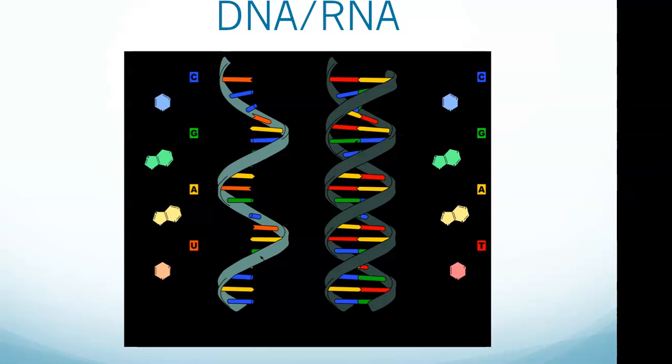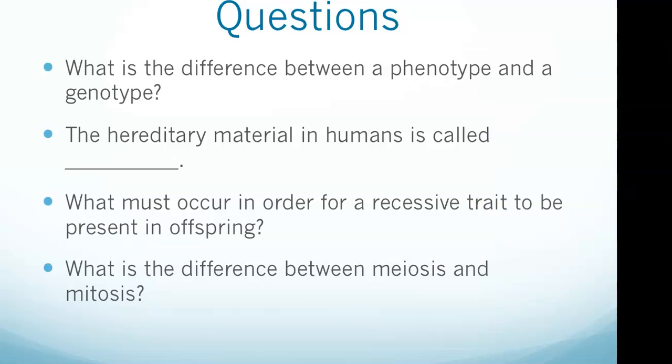DNA is the hereditary material in humans and almost all other organisms. So right away we already got one of our questions knocked out right there. The hereditary material in humans is called DNA.